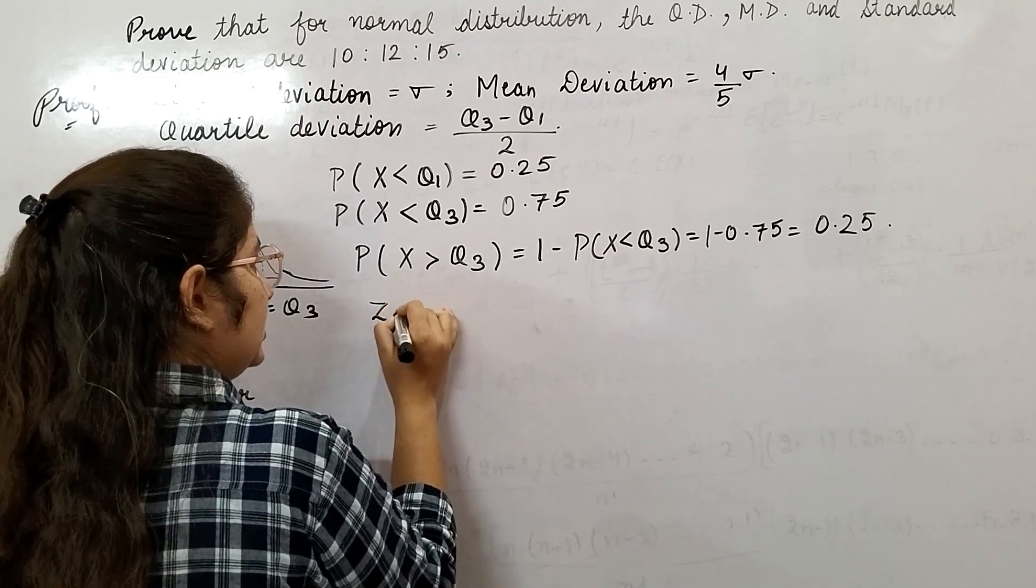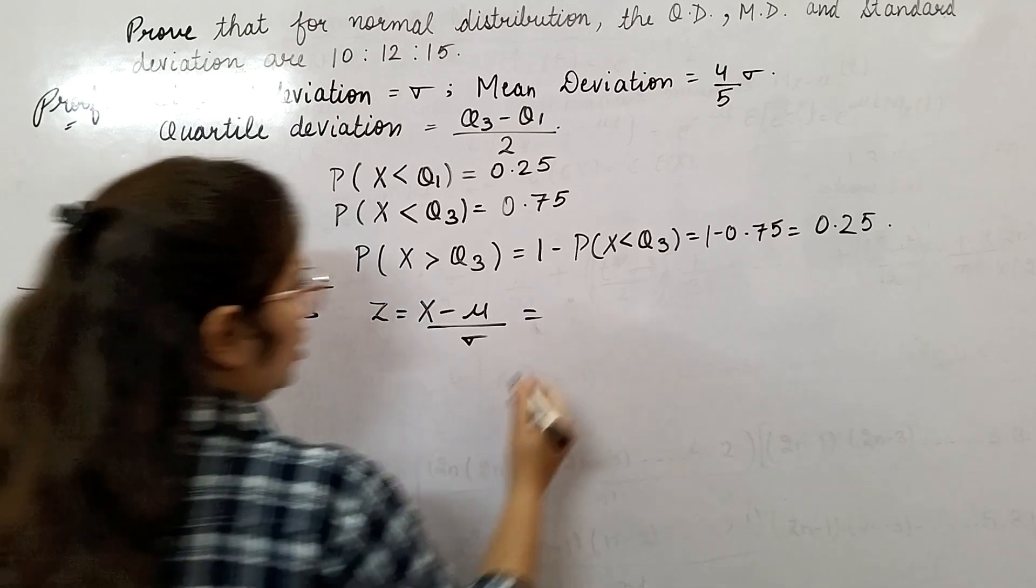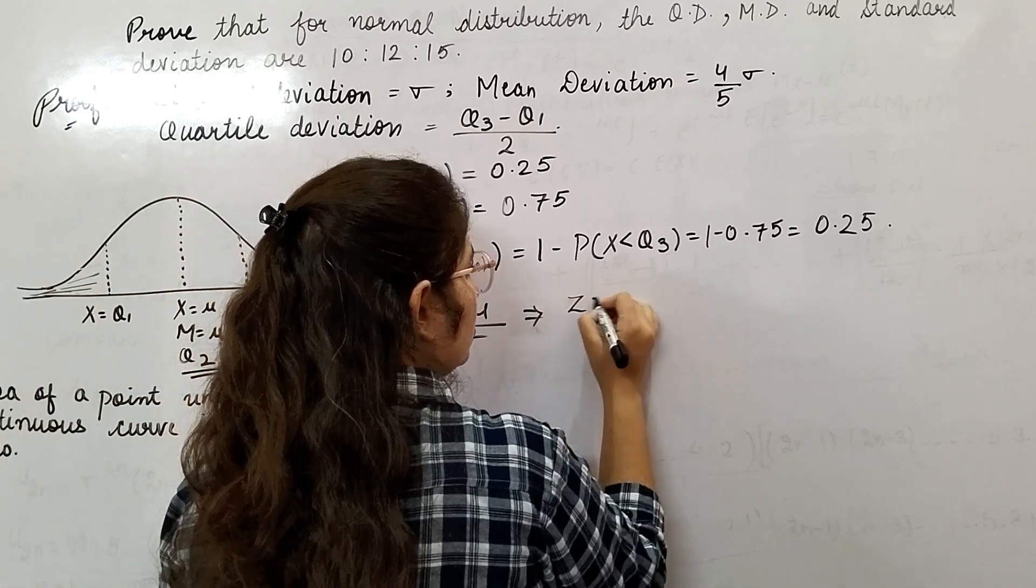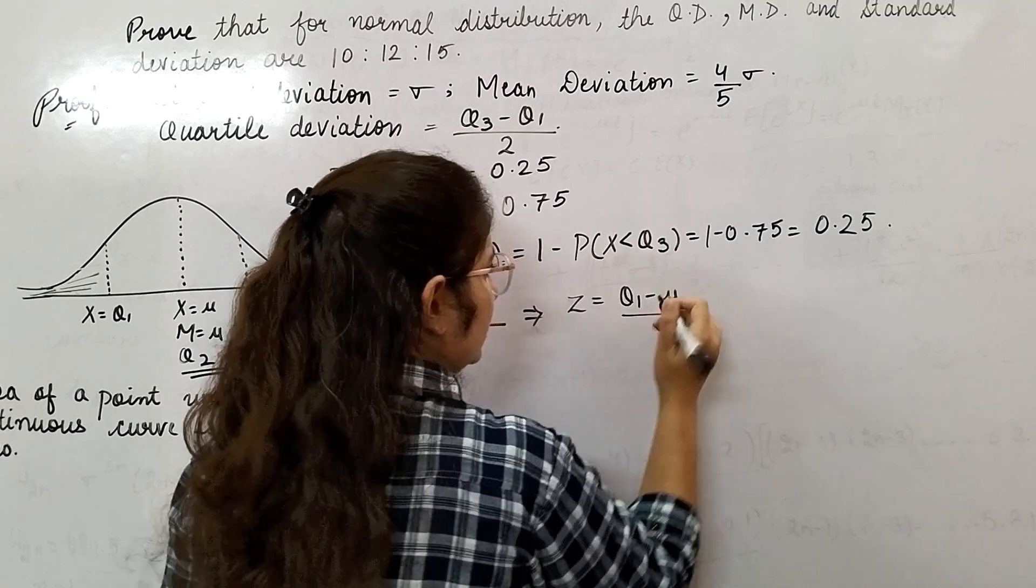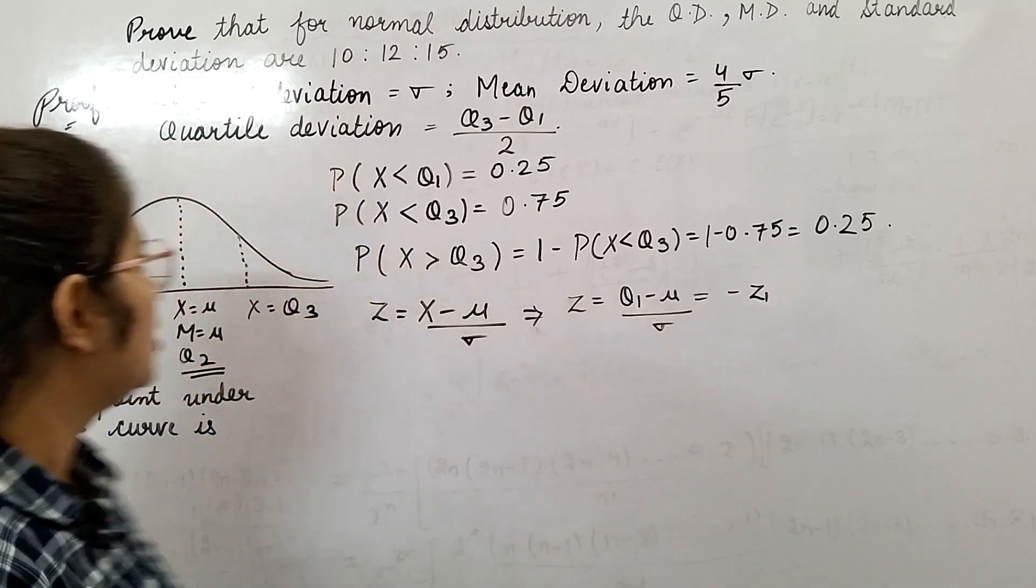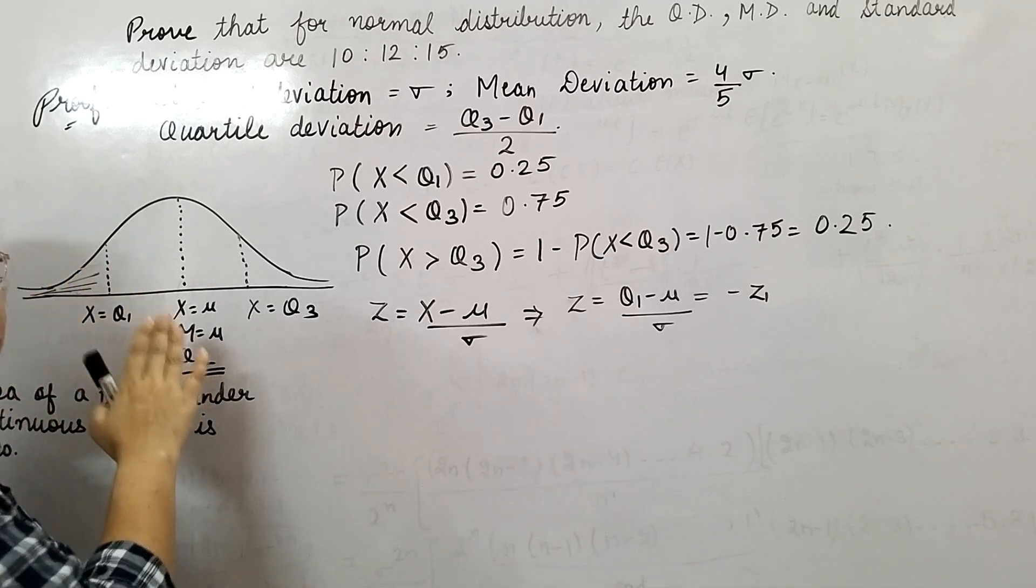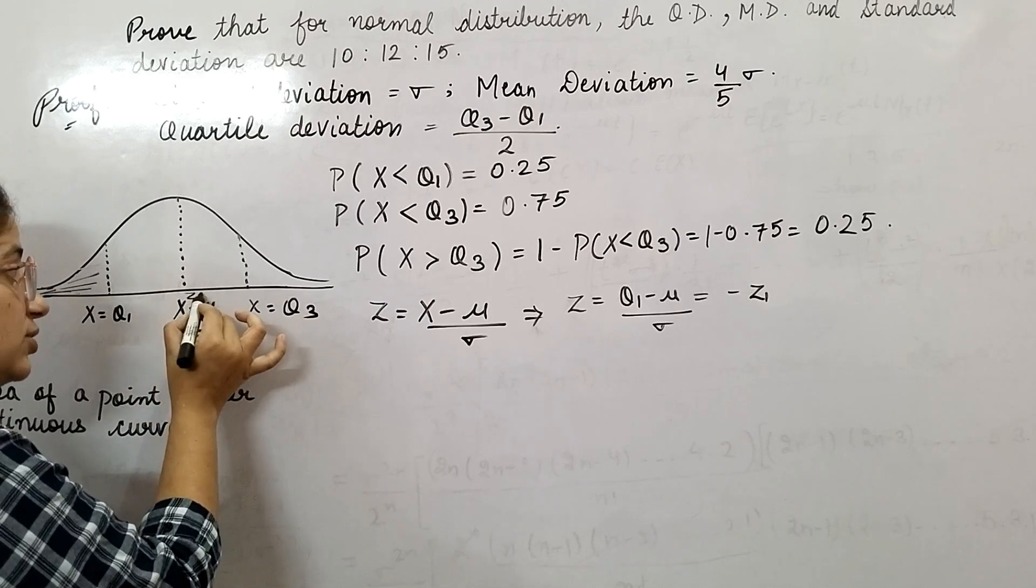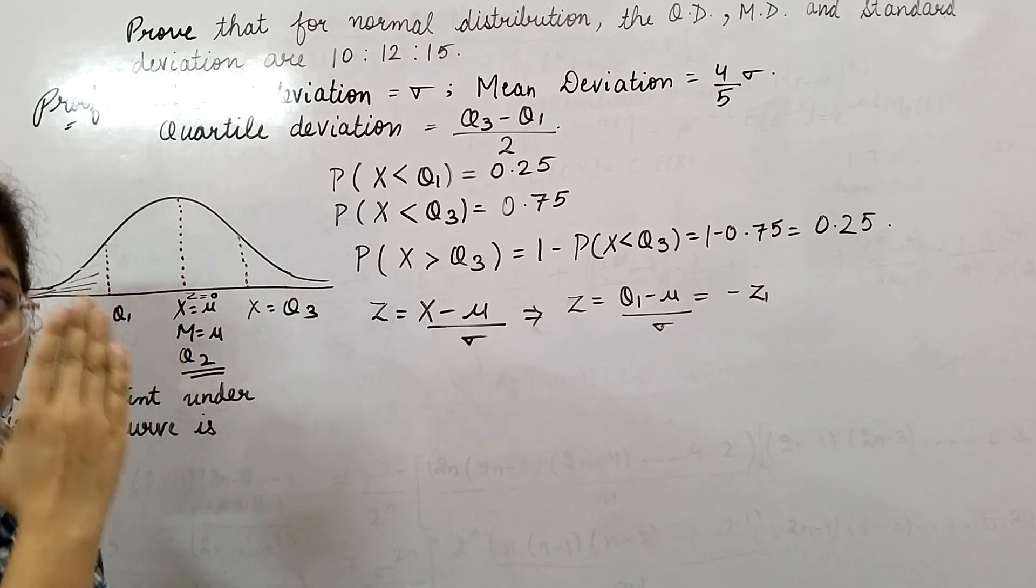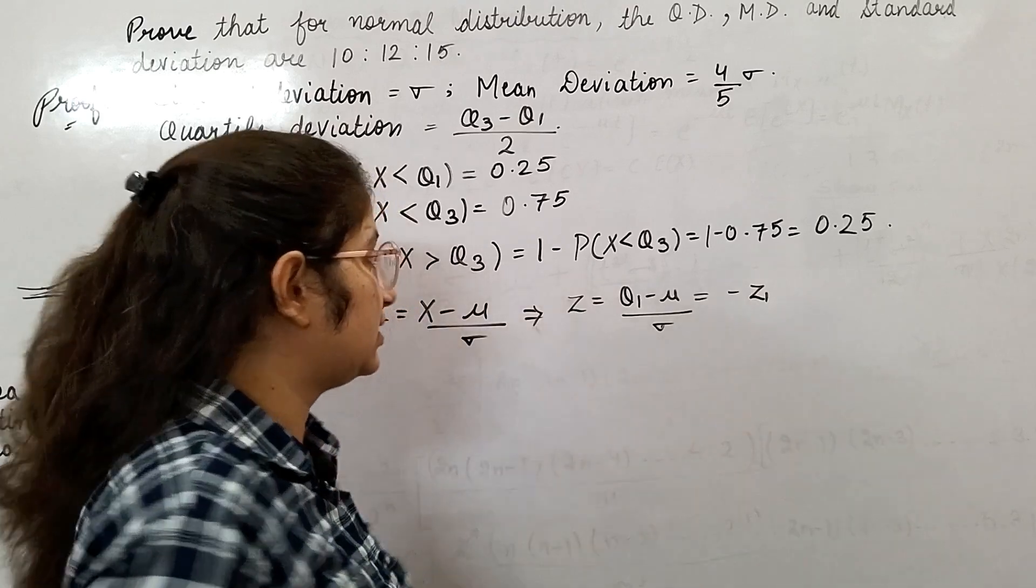Now, z equals x minus mu by sigma. If I give x the value q1, then z equals q1 minus mu by sigma. Let this equal minus z1. Why am I taking minus z1? Because when x equals q1, this point is lying on the left side. At the center, z equals 0. Since it's on the left side, that's why I have written minus z1.